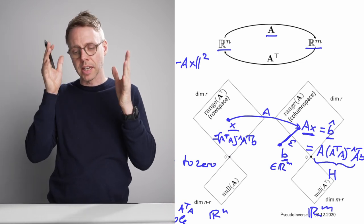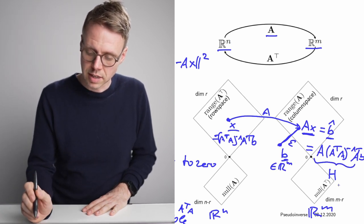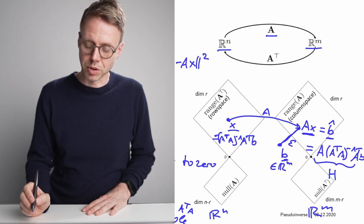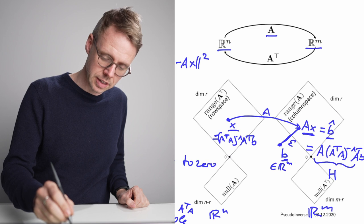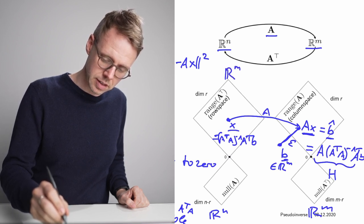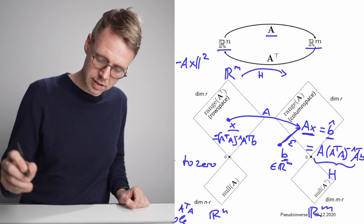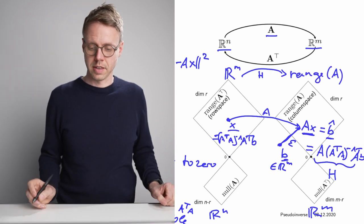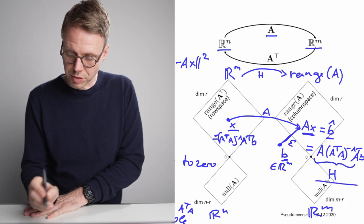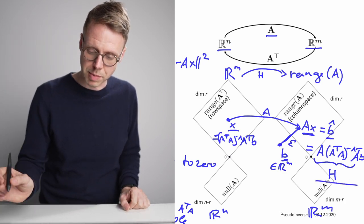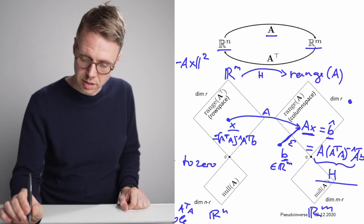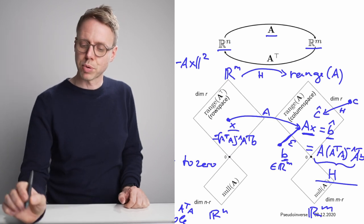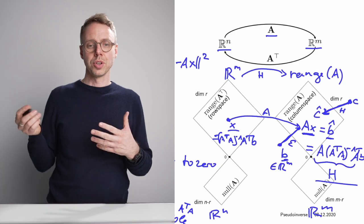This matrix H, which is A times the pseudoinverse — A(A^T A)^{-1} A^T — is a projector that maps from R^m to the column space, or the range, of A. Once we have computed H, we can take any arbitrary vector from R^m, multiply it by H, and obtain its least-squares projection onto the column space of A.